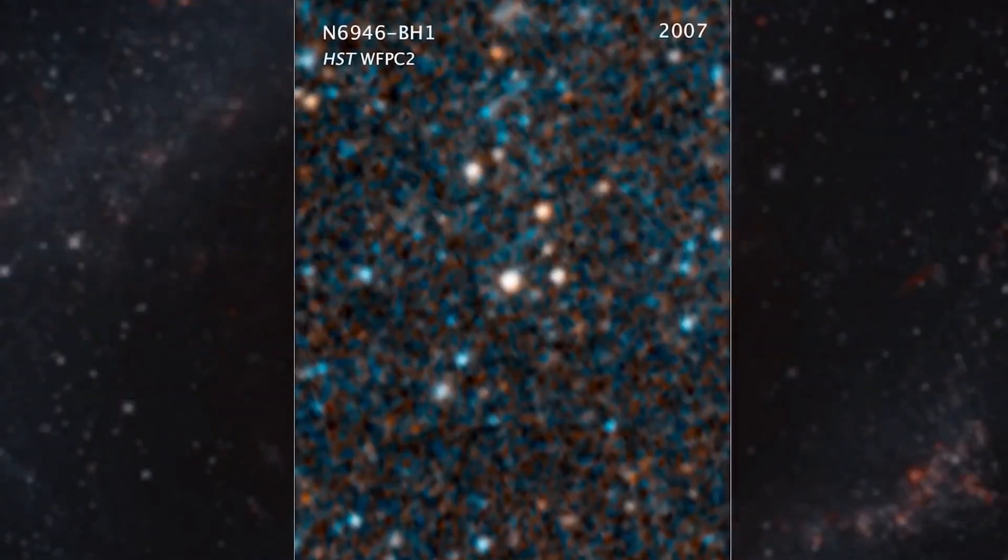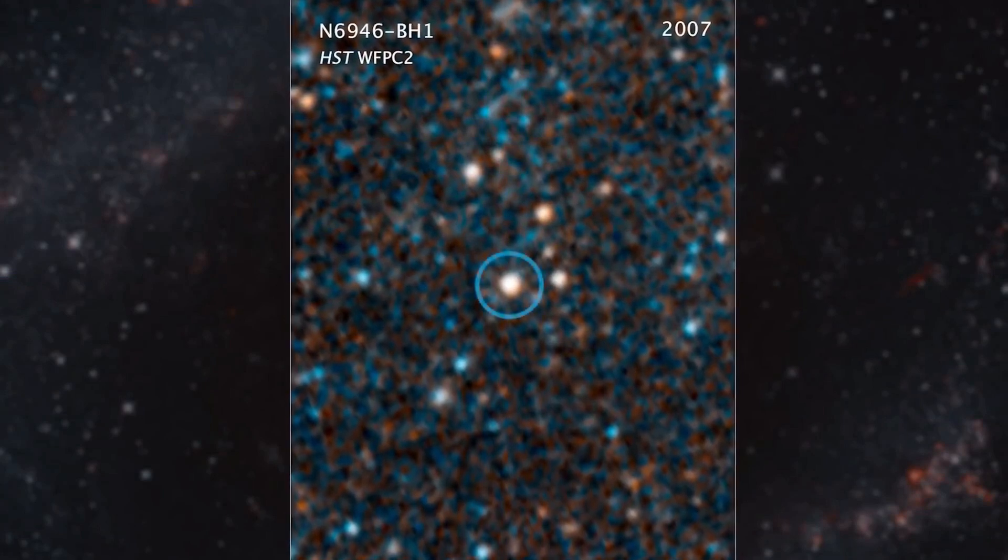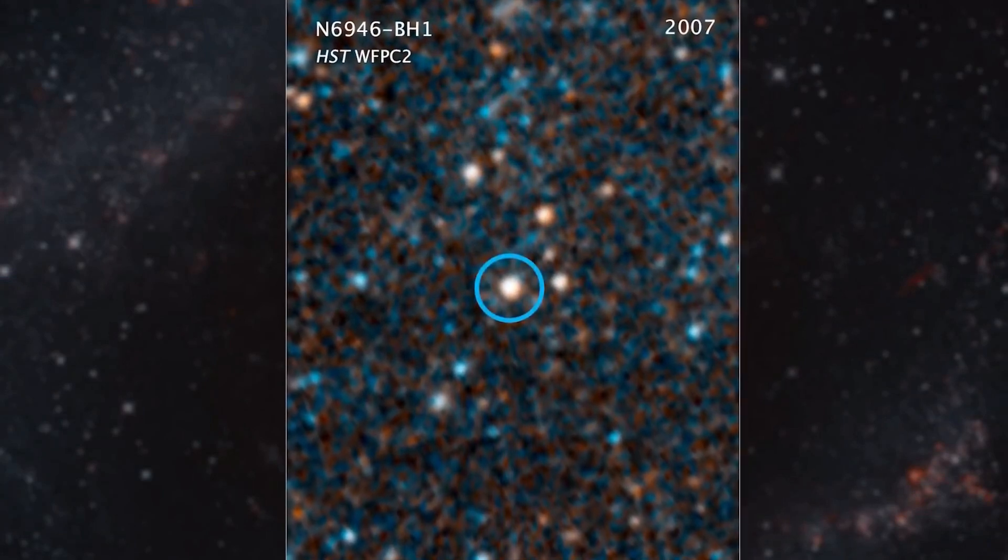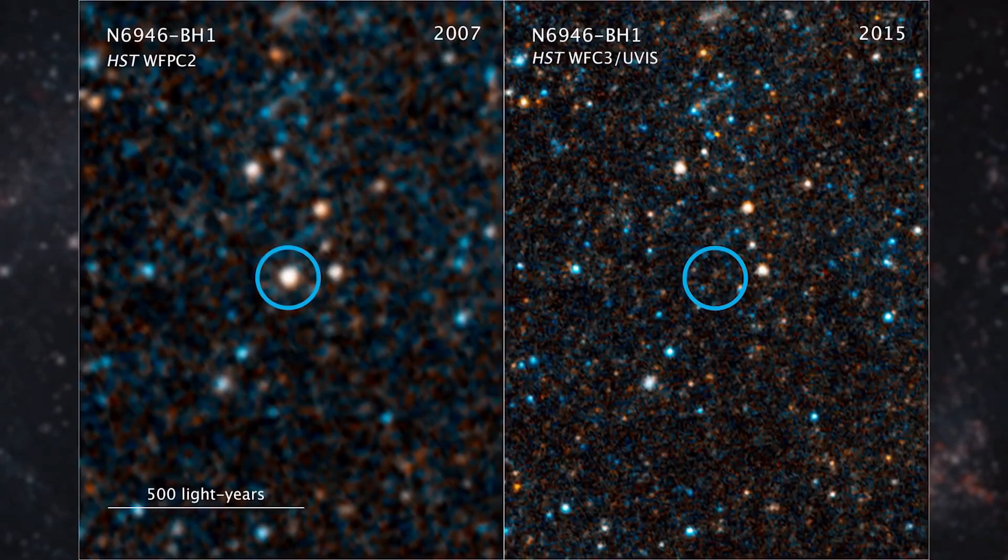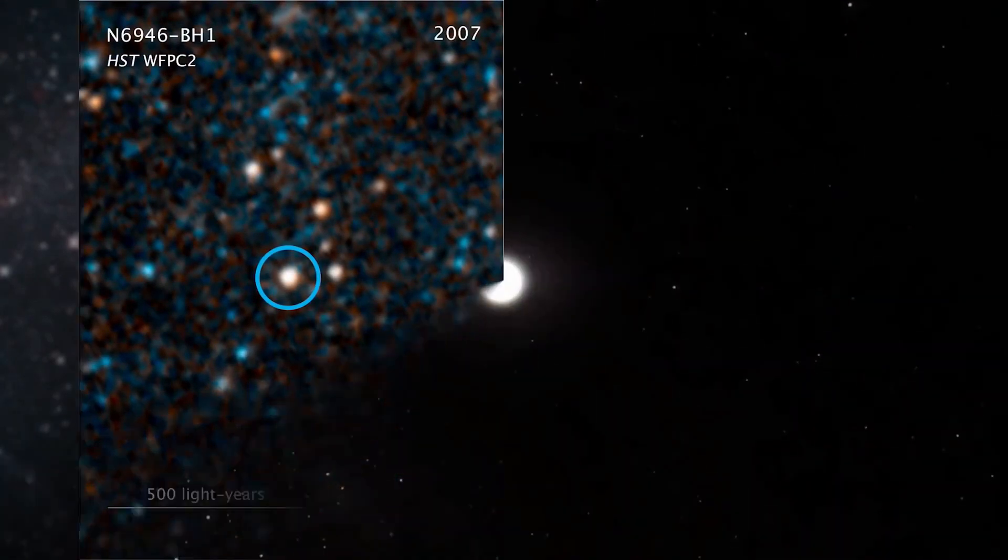In 2007, scientists noticed that one star, N6946-BH1, was beginning to weaken. In 2015 it disappeared—no big flash, no epic supernova.